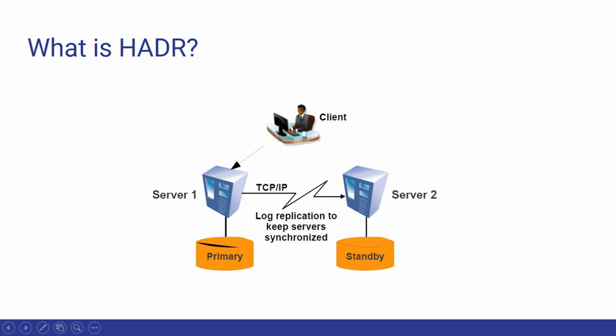In case of a disaster where our database servers fail totally and we are not able to recover, we have a replicated copy of our database in separate locations. Here we can see a client connected to a primary database server (server 1) performing transactions. In an HADR scenario, all applications connect to the primary database server, and there is a standby database server (server 2) that can be in the same vicinity as the primary if configuring for high availability.